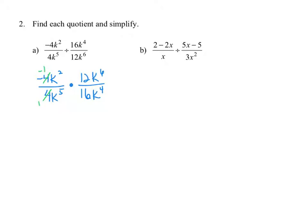4 goes into negative 4 negative 1 times. For 12 and 16, there's a greatest common factor of 4: dividing 12 by 4 gives 3, and 16 by 4 gives 4. Multiplying just the coefficients, we get negative 3 in the numerator over 4. For the variable part: k squared times k to the sixth — since bases are the same, we add exponents to get k to the eighth in the numerator. k to the fifth times k to the fourth in the denominator becomes k to the ninth. Using the quotient rule, we can subtract those exponents.